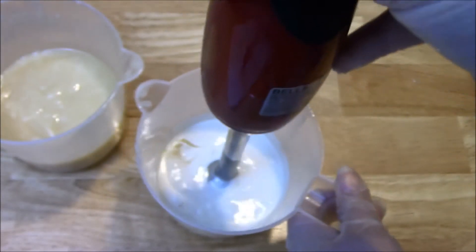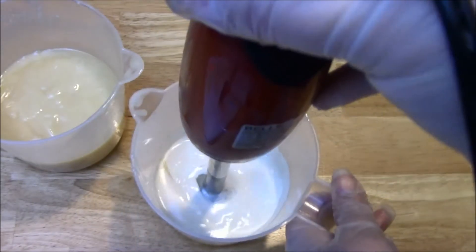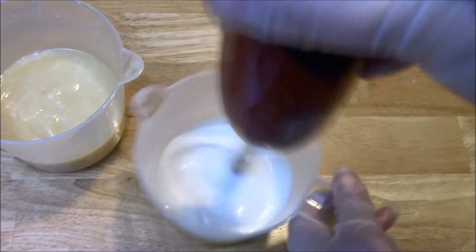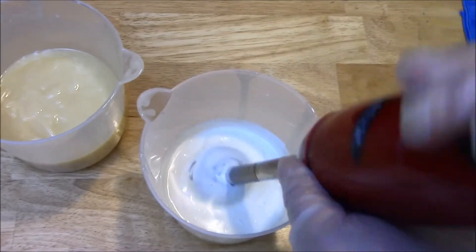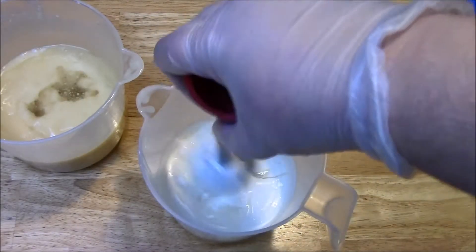The white will also cause the batter to thicken up a little bit as well as the fragrance. So you'll see towards the end how thick it is compared to the uncolored portion.